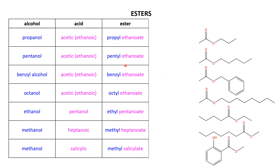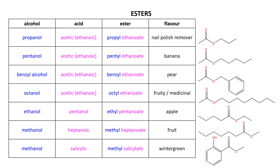Now the reason for picking these is because they have nice smells. Propylethanoate, or propylacetate — nail polish remover. Pentylethanoate smells like bananas. Benzylethanoate — pear drops, and so on, all the way down to methyl salicylate, the very familiar wintergreen smell. So hopefully some of you will come to our labs to do these and get some nice smelling compounds.